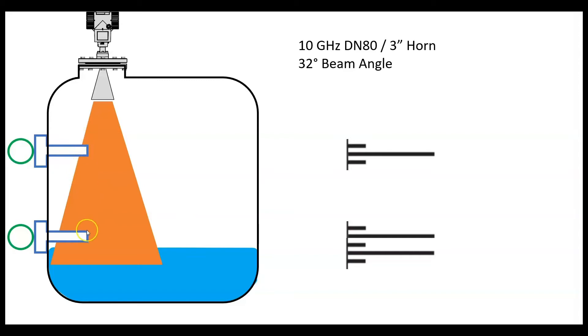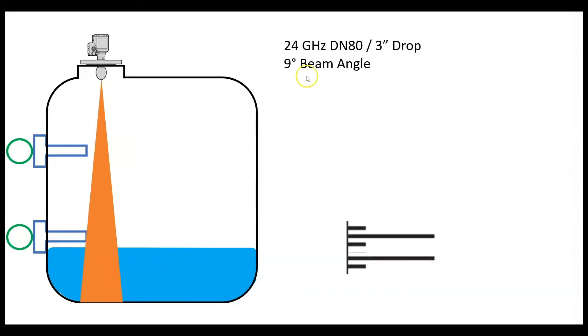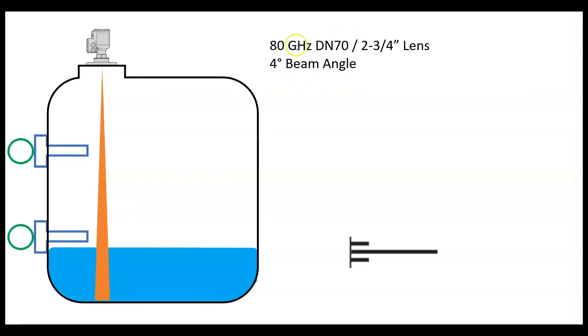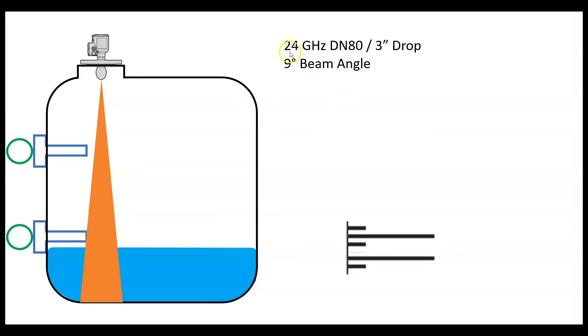So when you get to a 24 gigahertz, you notice that the beam gets a little smaller. Remember, the lower the frequency, the wider the beam. So as we get down to a much higher frequency, we're going to see a smaller beam. But here at 24, we're kind of in the middle.